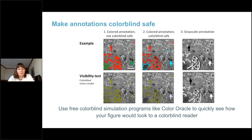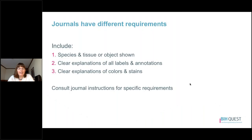As a reminder, you can use free colorblind simulation programs like Color Oracle to quickly see how your figure and annotations would look to a colorblind reader. For the seventh step — preparing figure legends — journals have different style requirements, so you'll need to consult your specific journal. Generally, you should include information on the species, tissue, or objects shown; clear explanations of all labels and annotations either on the figure itself or within the figure legend; and clear explanations of your colors and stains. Placing that information on the figure itself is always easier for your reader to interpret.